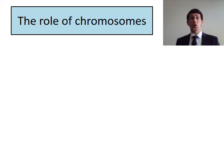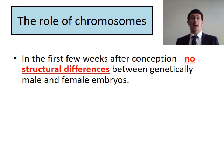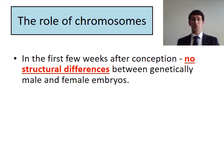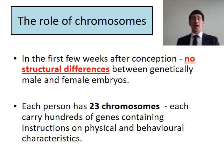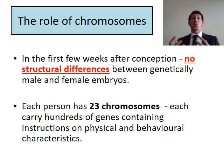The first thing we're going to look at is the role of chromosomes. After conception, and for a few weeks after that, there are no structural differences between a genetically male and female embryo. There are 23 different chromosomes, and each of these chromosomes contains hundreds and hundreds of genes which give us the instructions for physical and behavioural characteristics.